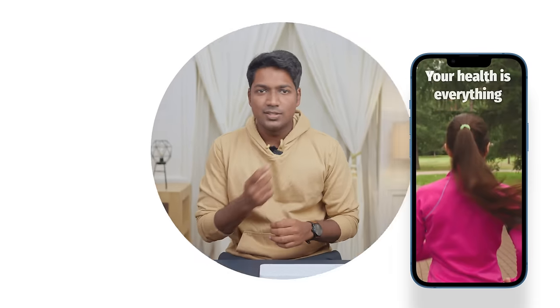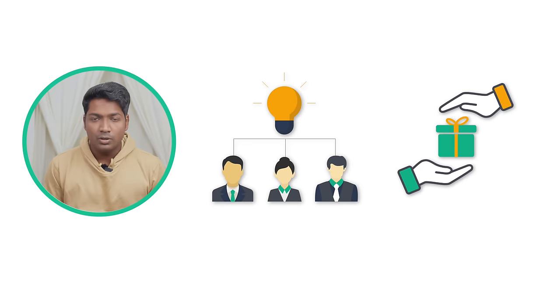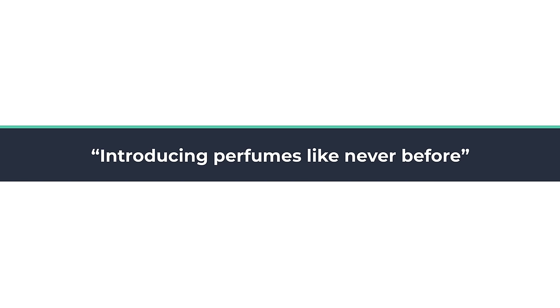So this way we can increase the viewers to watch the full video ad. How can you create an attention-grabbing message like this? First, you need to find out what people care about related to your product or service that you're offering. So let's say you want to create an ad about perfumes — find out what people care about when it comes to perfumes. People care about how unique and attractive the fragrance is. So I'm going to write 'Introducing perfumes like never before.' So this is something that people care about, which is their fragrance. So this is how you can create a message to capture people's attention.